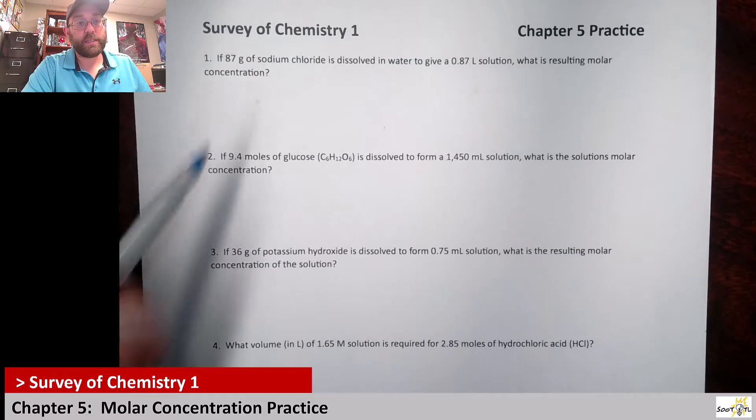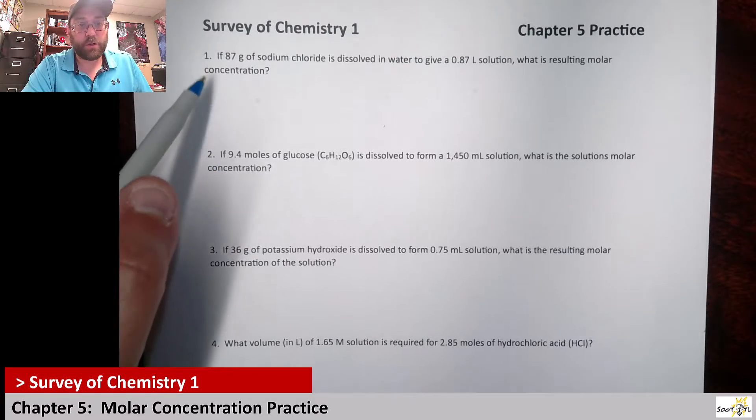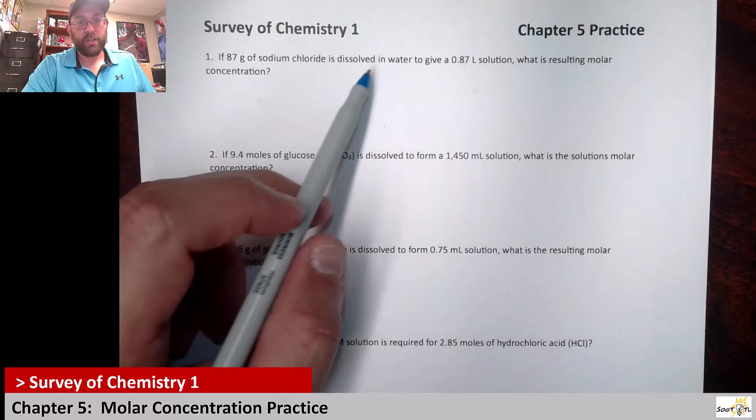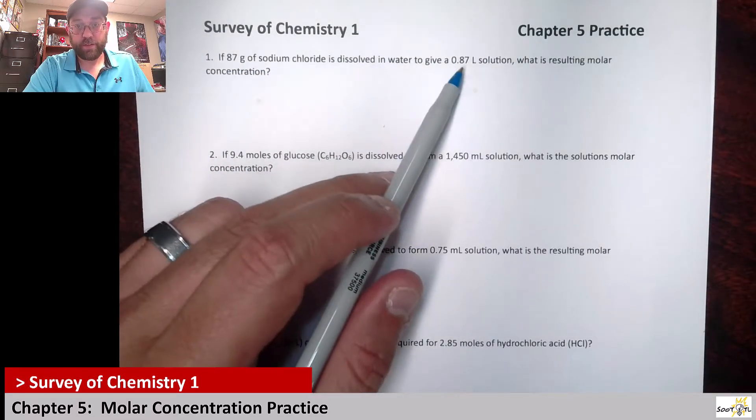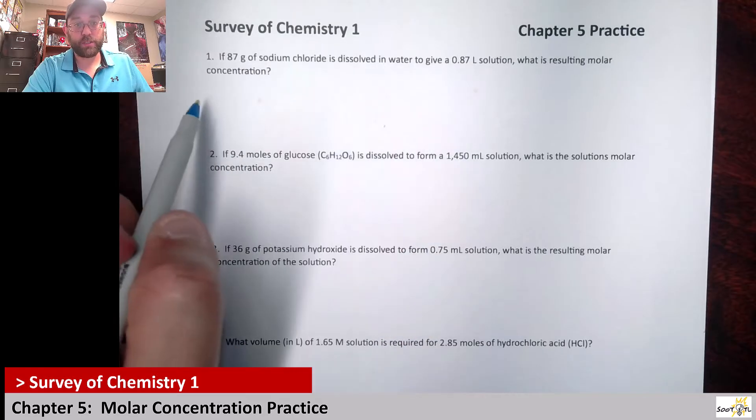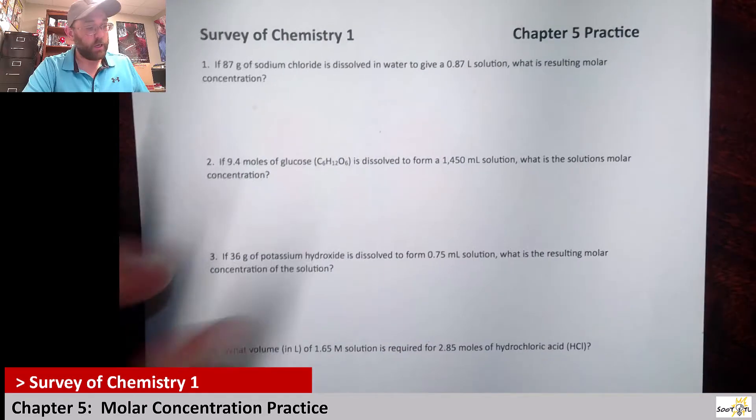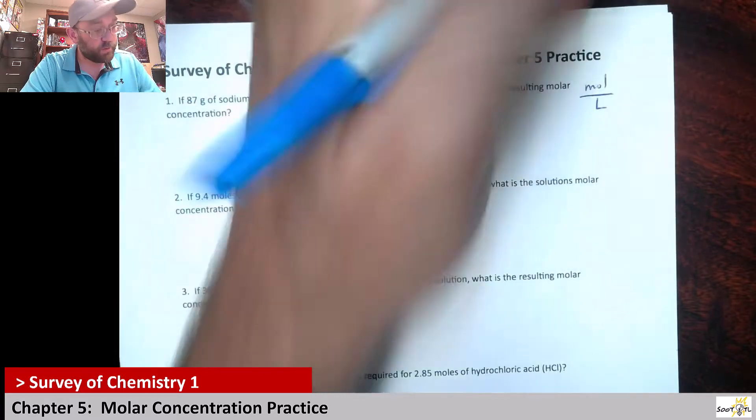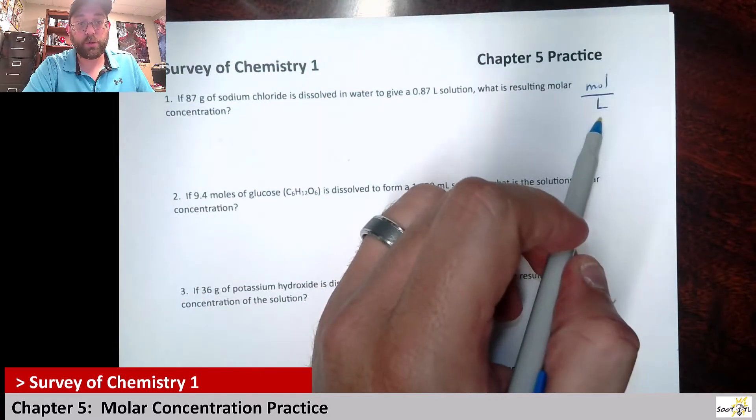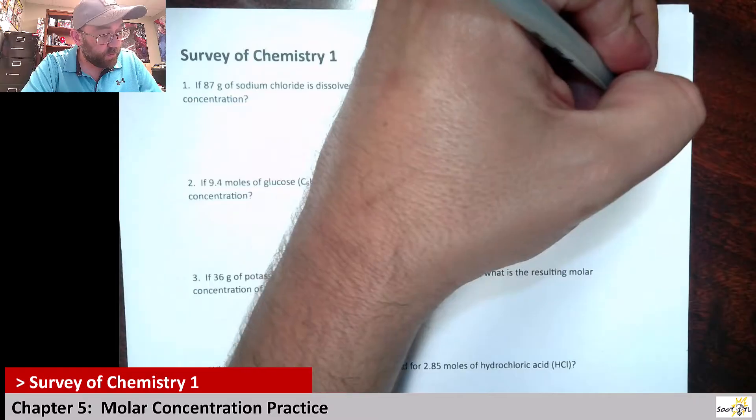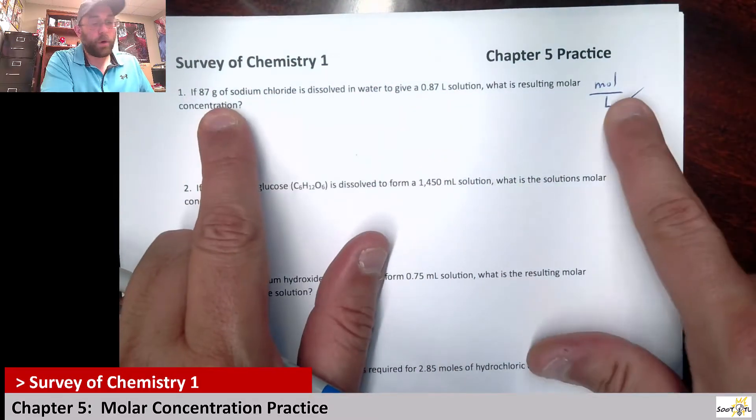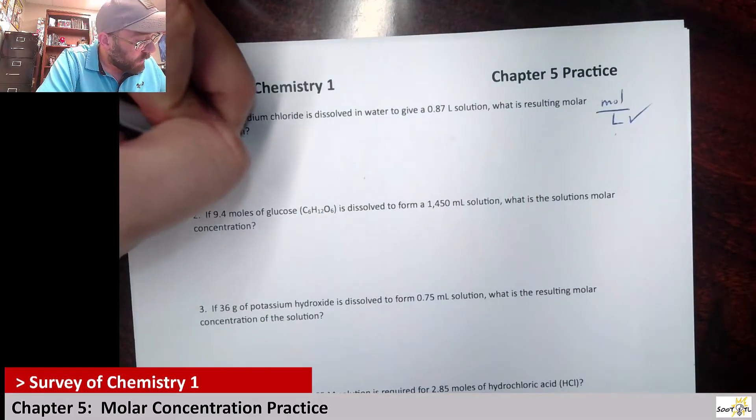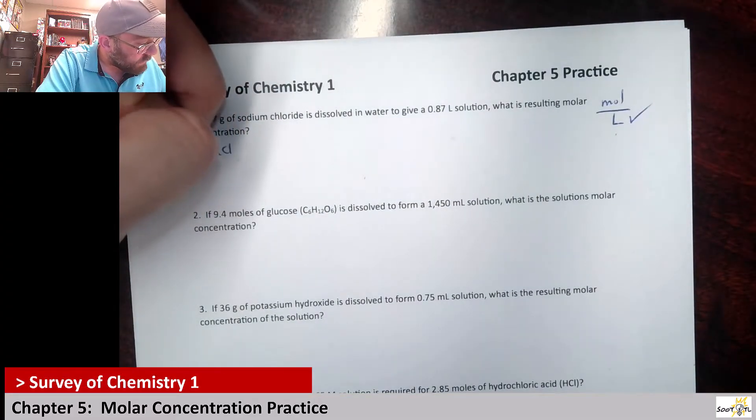So for this one it says if you have 87 grams of sodium chloride dissolved in water to give a 0.87 liter solution, what's the resulting molar concentration? Now remember molar concentration is talking about moles over liters, moles of solute over liters of solution. We have the liters of solution, but we don't have the moles, we have a mass amount. So we need to take sodium chloride and figure out what its molar mass is.